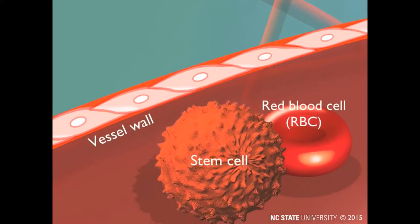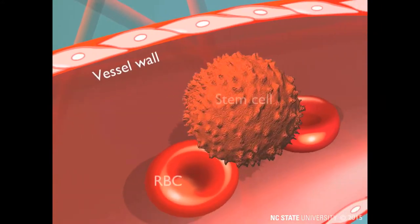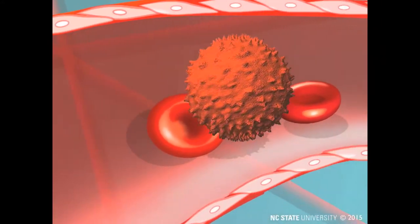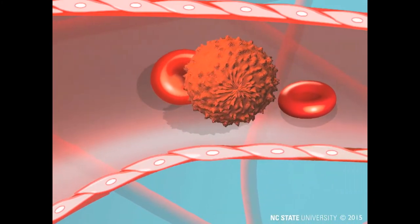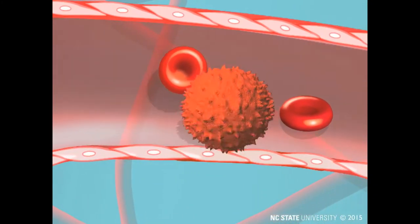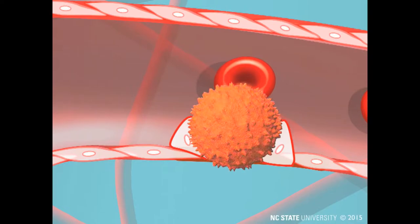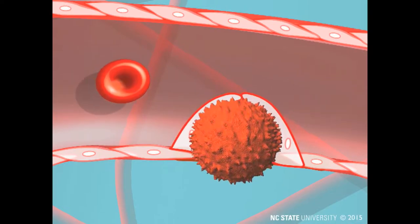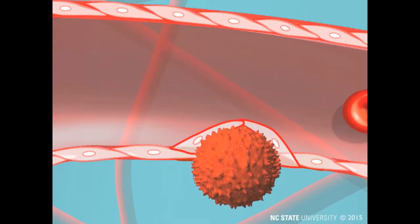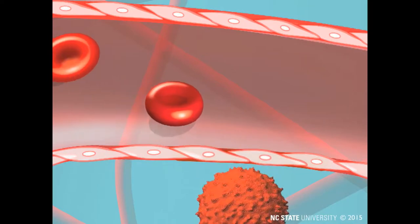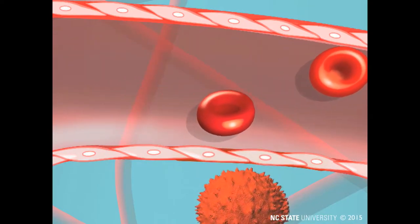Angiopellosis represents an alternative mechanism of cell extravasation. In this method, the cell will travel through the bloodstream and then attach to the blood vessel wall. The endothelial cells of the blood vessel will then actively wrap around the cell and remodel and push it from the inside of the lumen into the surrounding tissue where it can exert its beneficial and regenerative effects.